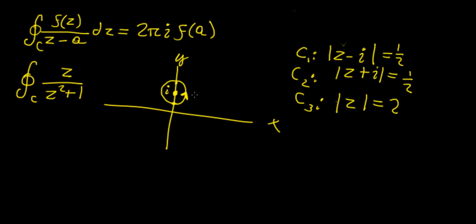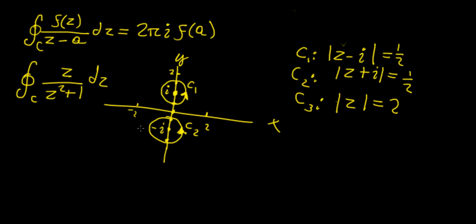We orient our curves anti-clockwise, which is the general convention. Anti-clockwise orientation means the integral is taken as positive. So C1 is the small circle centered at i, C2 is the small circle centered at -i, and finally C3 is a circle centered at the origin with radius 2.